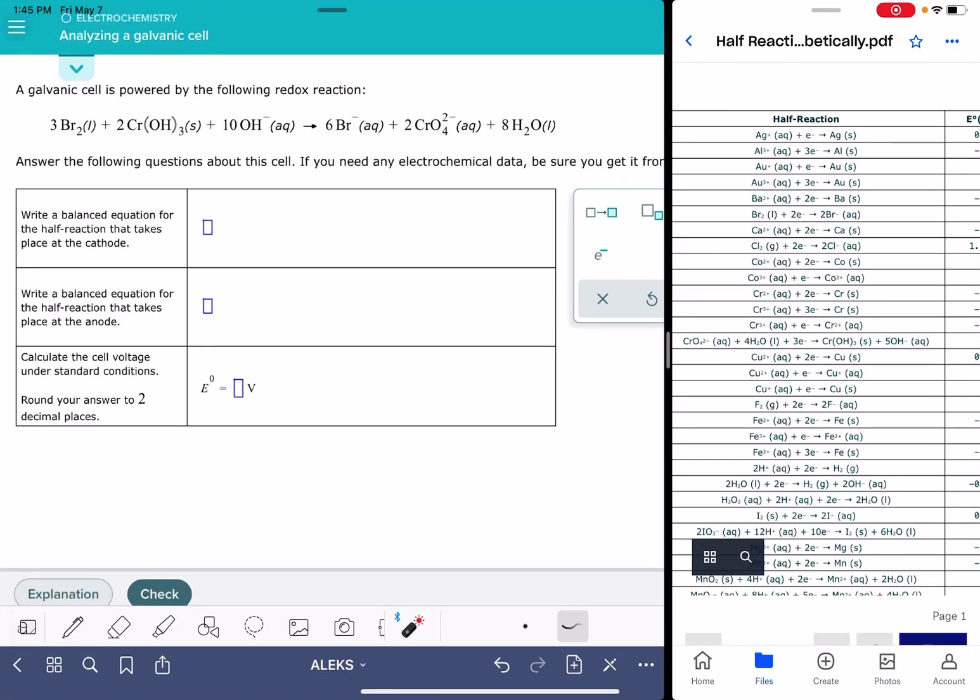In this video, I'll show you how to solve the Alex problem called analyzing a galvanic cell. In this problem, we're given a redox reaction, and then we are being asked to write the half reaction that's taking place at the cathode and also the anode and calculate the voltage of the cell.